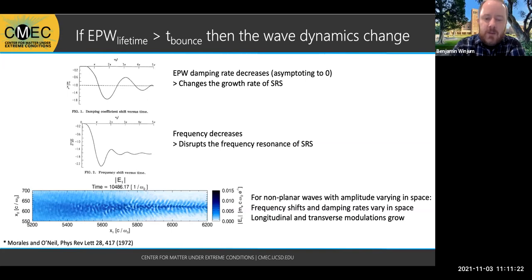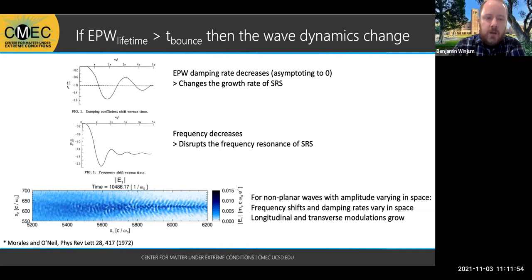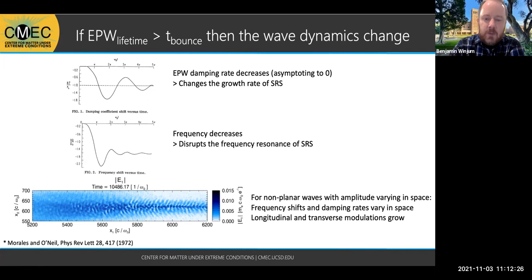This was studied in the early stages of looking at nonlinear effects on plasma waves. The Landau damping rate is true in the linear state, but as particles begin to bounce in the potential well and give energy and momentum back to the wave, the plasma wave damping rate can decrease. Ultimately, when these particles phase mix so that there are just as many taking energy as giving it back, the electron plasma wave damping rate can asymptote to zero. That can completely change the growth rate of Raman scattering if the wave exists for times longer than the bounce time of the particles. The real part of the frequency can also decrease, disrupting the frequency matching conditions for the instability.